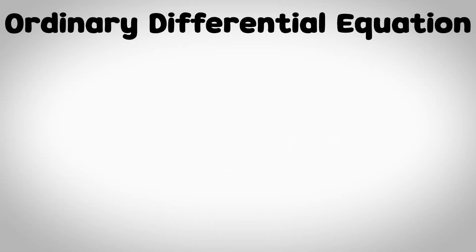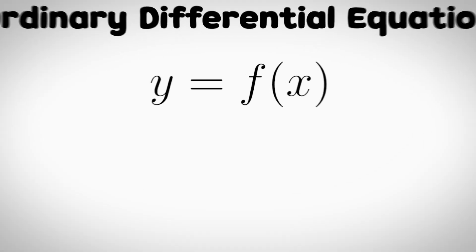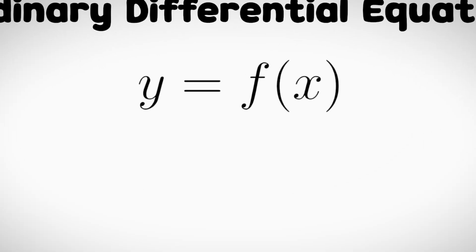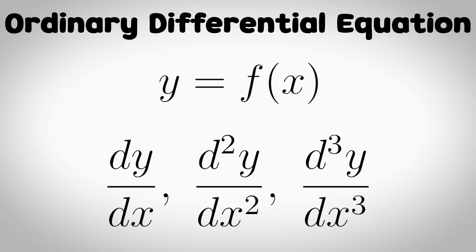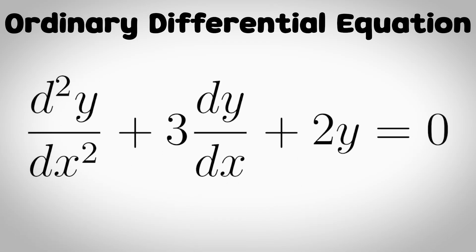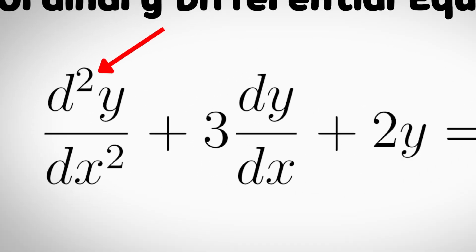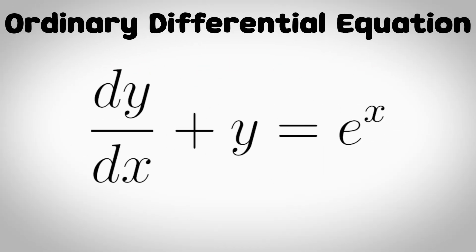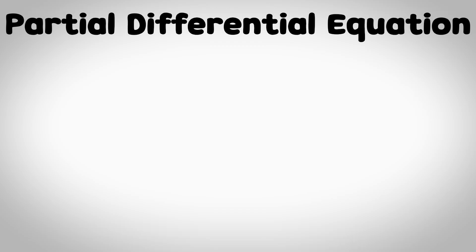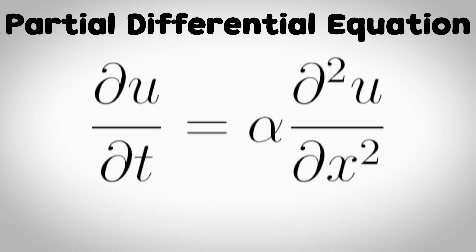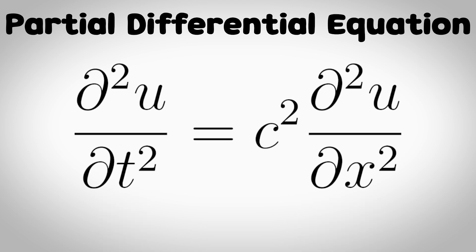An ordinary differential equation is an equation that involves a function of a single independent variable like y equals f of x and its derivatives dy/dx, d²y/dx² and so on. The order of an ordinary differential equation depends on what the deepest level of the derivative is. So this is an example of a first order differential equation and the second order is something like this. A partial differential equation is the same thing but with multiple independent variables and partial derivatives. For example, the one dimensional heat equation or the one dimensional wave equation.